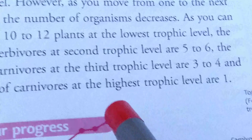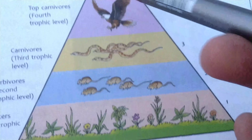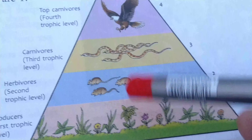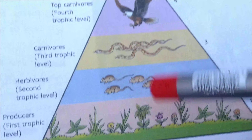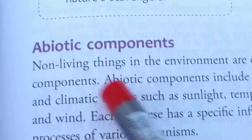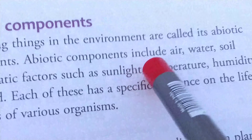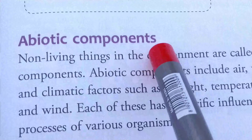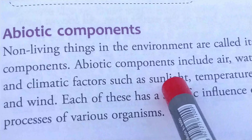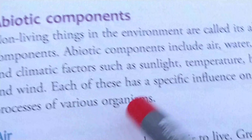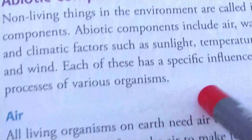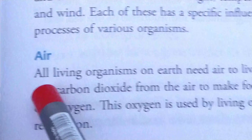The various Trophic Levels in a food chain can also be shown by a pyramid of numbers. It shows that at the first Trophic Level the number of organisms is larger than the other levels. However, as you move from one to the next Trophic Level, the number of organisms decreases. Looking at the figure, there are 10 to 12 plants at the lowest level, 5 to 6 herbivores at the second level, 3 to 4 carnivores at the third level, and only one carnivore at the highest peak Trophic Level.